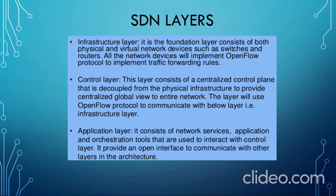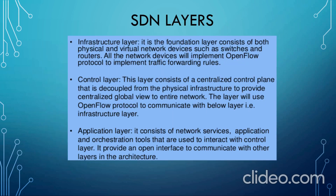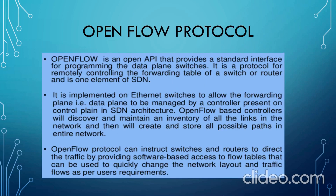Now let us understand what the OpenFlow protocol is. As we discussed earlier, OpenFlow protocol is used between the infrastructure layer and the control layer to do all the networking in our devices. OpenFlow was an open-source API which provides a standard interface for programming. It is implemented on Ethernet switches to allow the forwarding of data packets or network packets between devices or between routers in our IoT network. OpenFlow-based controllers will discover and maintain an inventory of all the links in the network, and then will create and store all possible paths in the entire network.